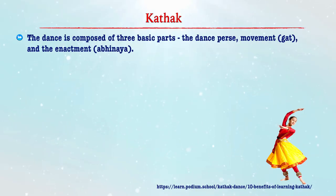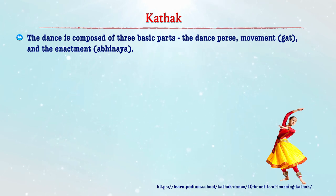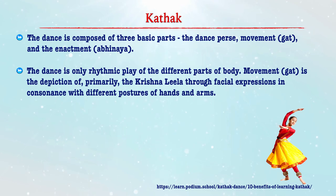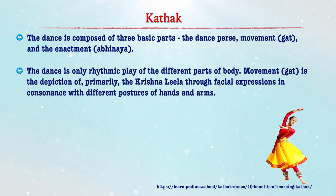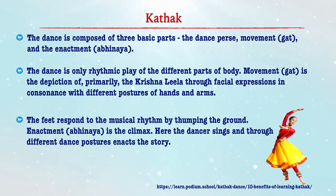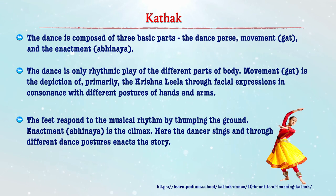Kathak is composed of three basic parts: the dance verse, the movement called gat, and the enactment or abhinaya. The dance is a rhythmic play of different parts of the body. Gat is the description of primarily the Krishna leela through facial expressions in consonance with different postures of hand and arm. The feet respond to the musical rhythm by thumping the ground. Enactment or abhinaya is the climax, where the dancer focuses on the enactment of the story through different dance postures.